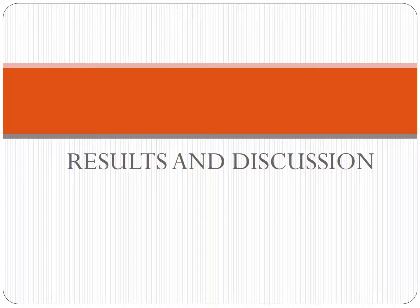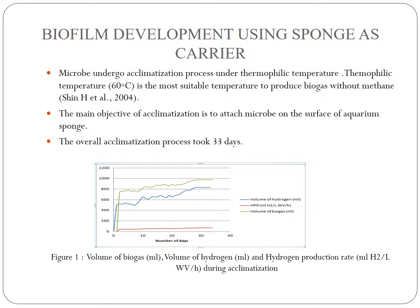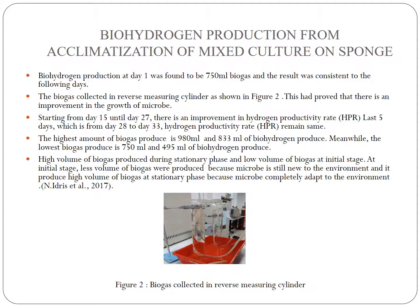Now for Results and Discussion. First is biofilm development using sponge as carrier. Microbes undergo acclimatization at thermophilic temperature of 60 degrees Celsius, which is the most suitable temperature to produce a high amount of biogas. The main objective of acclimatization is to attach microbes on the surface of the aquarium sponge. The overall acclimatization process took 33 days. Next is biohydrogen production from acclimatization of mixed culture on sponge. Biohydrogen production at day 1 was found to be 750 ml of biogas, and the result was consistent in the following days. Starting from day 15 until day 27, there is an improvement in HPR, and in the last 5 days, from day 28 to day 33, the HPR remains the same.